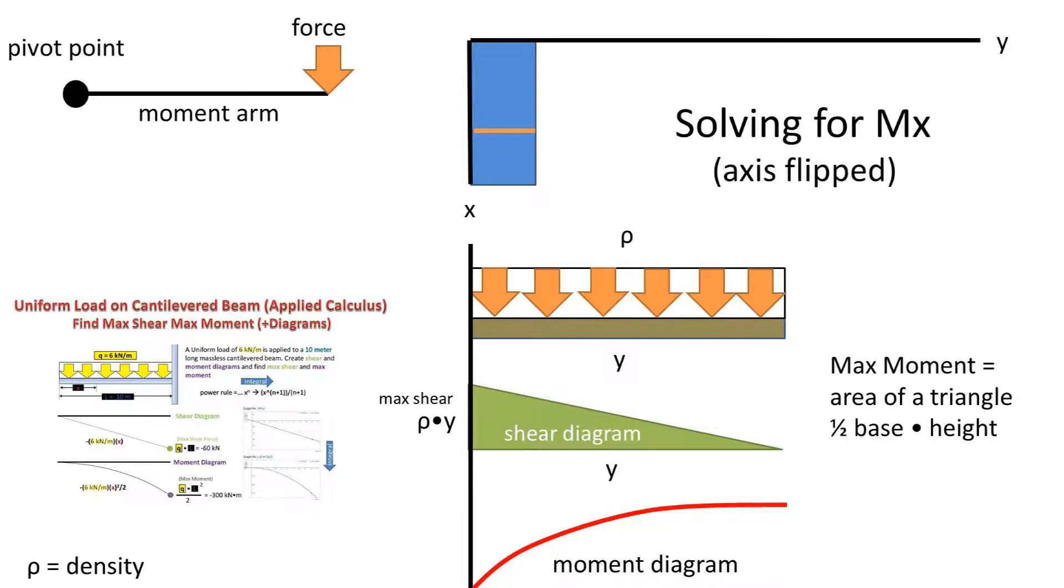Thinking back to geometry, the area of a triangle is one-half the base times the height. So we can plug in our base length of the shear diagram of y and our height of the shear diagram of density times y.